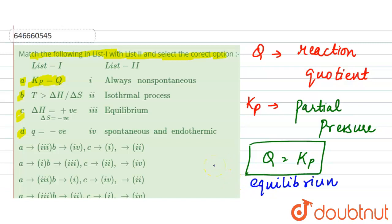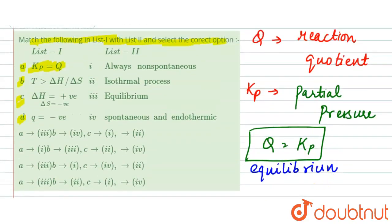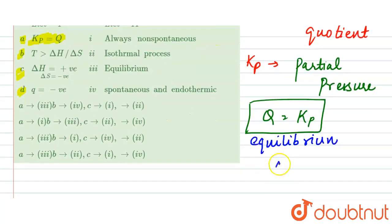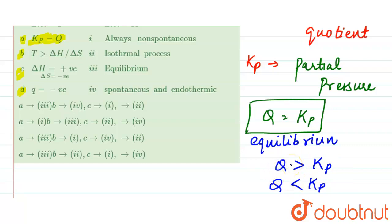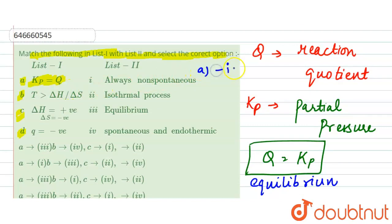Equilibrium is the state at which properties like temperature, pressure, and concentration do not change with time. This relation shows three conditions: Q = Kp (equilibrium), Q > Kp (reaction proceeds backward), and Q < Kp (reaction proceeds forward). So for part (a), the answer is option iii — Equilibrium.